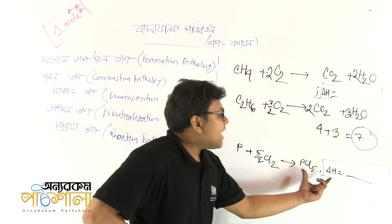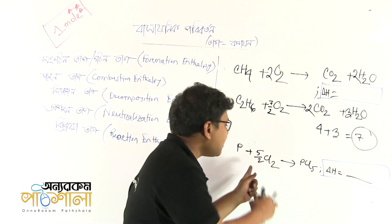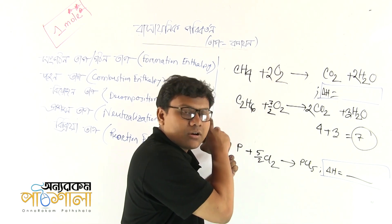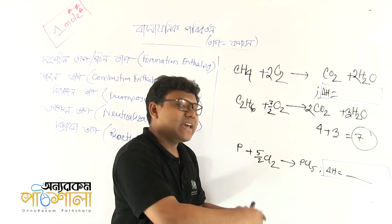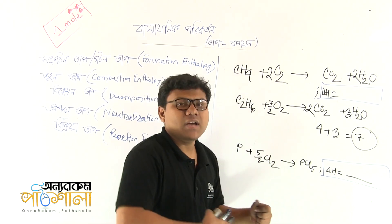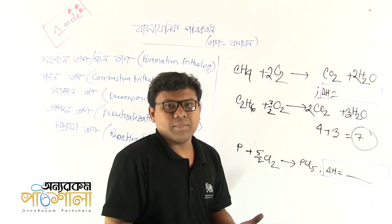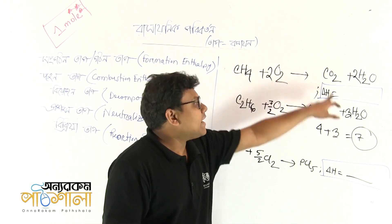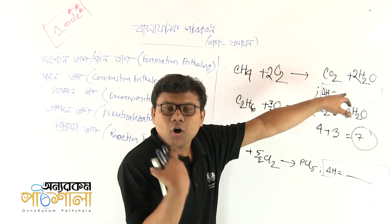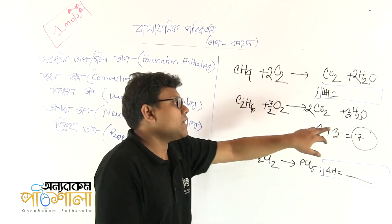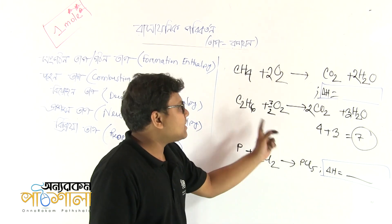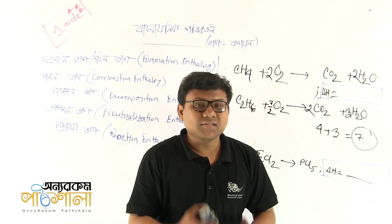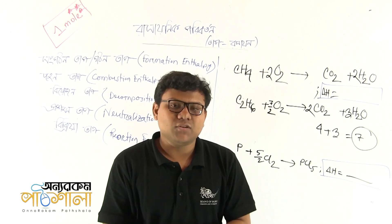A is the ΔH_A, and B is the potential for formation enthalpy. It is also the reaction enthalpy. At the same time, which factor is the potential for reaction enthalpy?